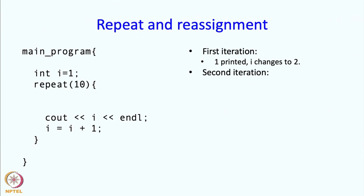In the second iteration what is going to happen, well the value that i now has is 2. So 2 will get printed and i equal to i plus 1 will change that 2 to 3.